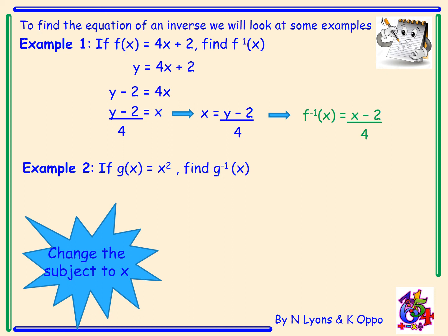Example 2: if g of x is x squared, we need to find g inverse. Firstly, we replace g of x with y, so y equals x squared, and we need to change the subject of the formula to x. The opposite of squaring would be to take the square root, so we can rewrite the function as x equals the square root of y. Once x is the subject, we change x to g inverse and y becomes x, so g inverse equals the square root of x.